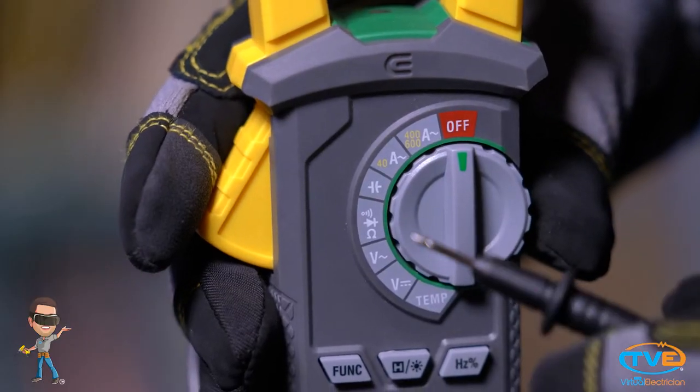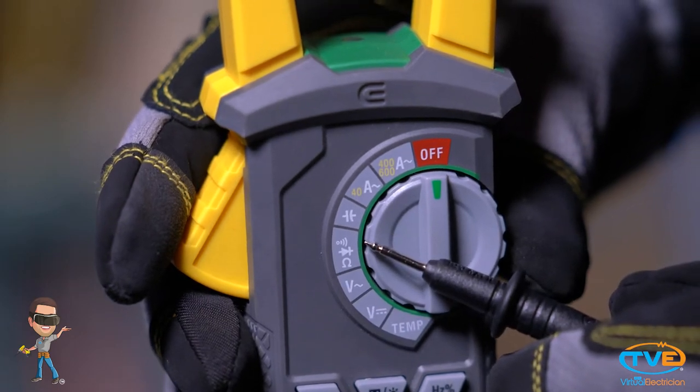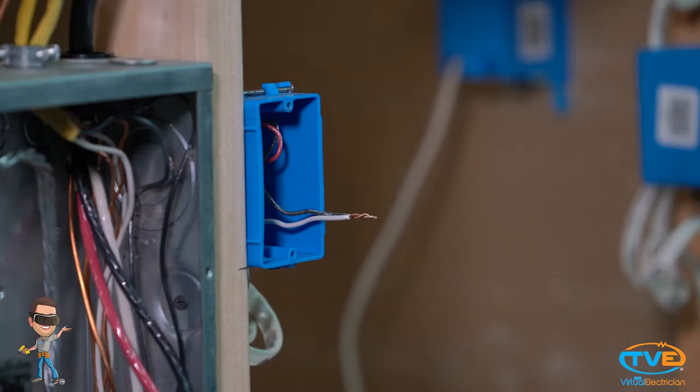This is a function on your multimeter. It is usually identified with the speaker symbol. What you do is you twist two wires together on one end.